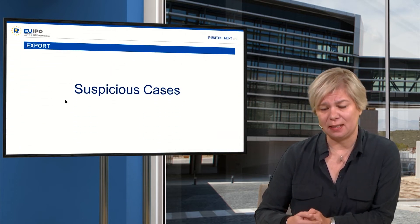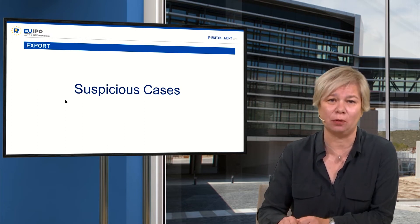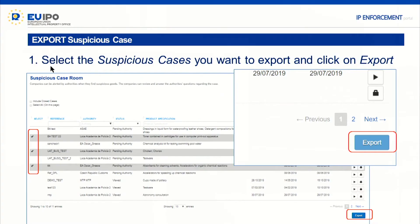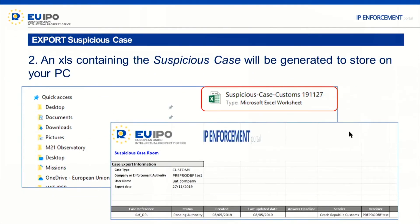For suspicious cases, it's basically the same principle. You can export the information of suspicious cases. You go to the suspicious case room, you will find a new export button. You select the suspicious cases you want to export, click on export, and you will open your desktop and find the new folder there. It's an Excel file containing all the information about the suspicious cases you have selected, which you can save on your desktop.